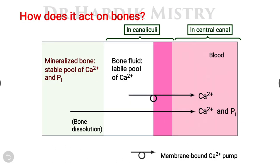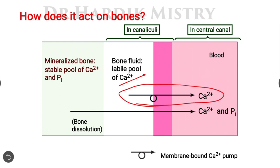How does parathyroid hormone act on bone? First, it shifts the labile pool of calcium from bone fluid into the blood via a membrane-bound calcium pump. Second, it stimulates bone dissolution or bone resorption, releasing the stable pool of calcium and phosphate ions into the blood. This is how parathyroid hormone acts on bone to increase calcium levels in the blood.